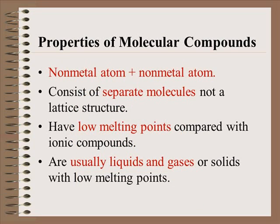The properties of molecular compounds are very different from the properties of ionic compounds. You now are talking about two non-metal atoms bonding. These are separate molecules. They do not create those crystal lattice structures. These compounds have very low melting points compared with ionic compounds, and they are usually liquids, gases, or very soft solids with low melting points.